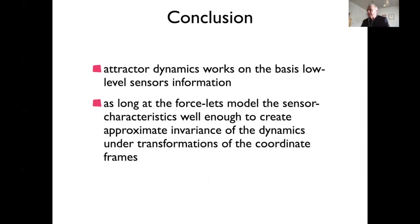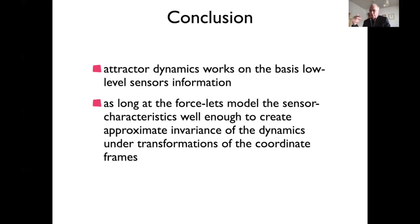This concludes the first part of the lecture showing how attractor dynamics works with low-level sensors. The key element is that the force-lets together create a dynamics with the required invariance — the dynamics really describes the change of heading as a function of orientation angles. Now I'll show something much more radical where the same principle applies one derivative higher: the rate of change as the dynamic variable, with its change — acceleration — being a well-defined function of the rate of change.